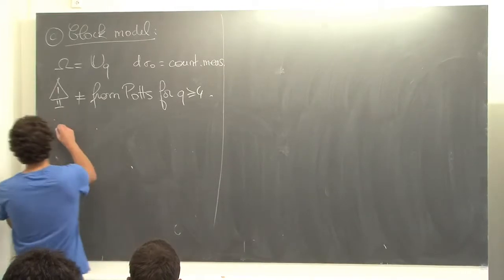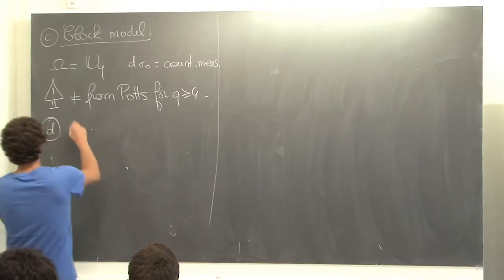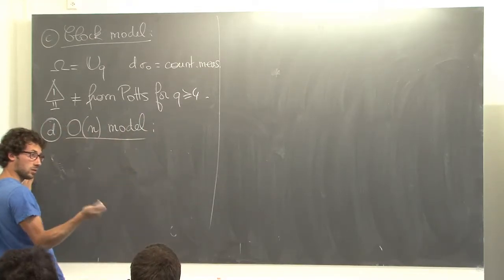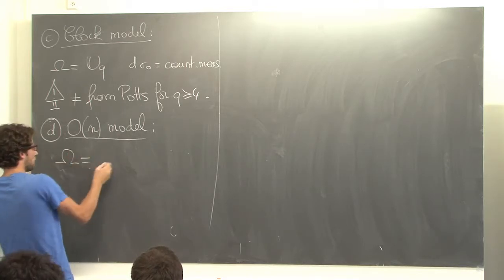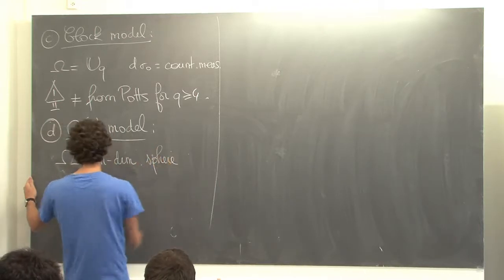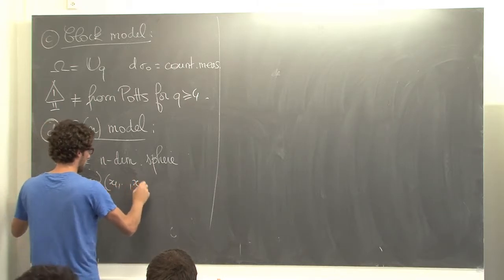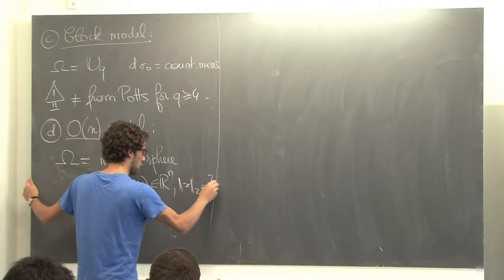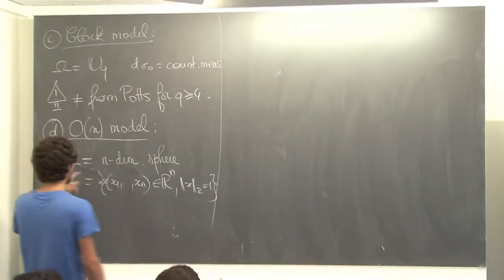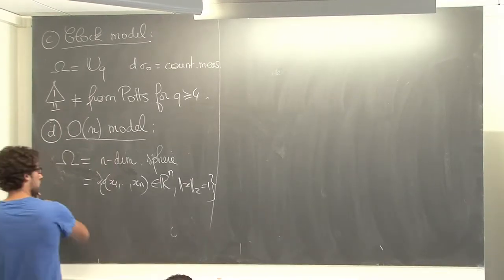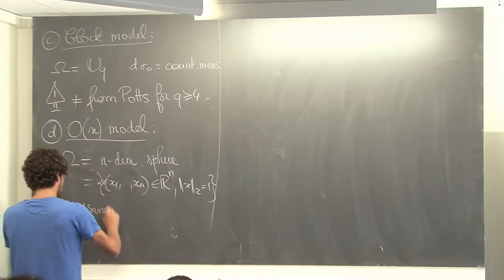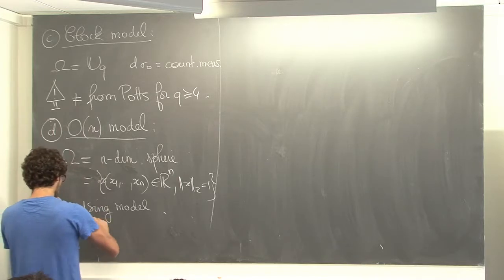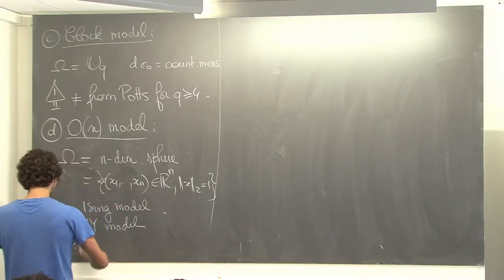Now continuous spin models. The O(n) model: omega is the n-dimensional sphere S^{n-1} — the set of (x_1, ..., x_n) with Euclidean norm 1. This is also a generalization of the Ising model: n = 1 is just the Ising model. n = 2 is called the XY model, n = 3 is called the Heisenberg model. Heisenberg introduced a quantum version of this in dimension 2 to model magnets, since a spin can point in any direction in space.